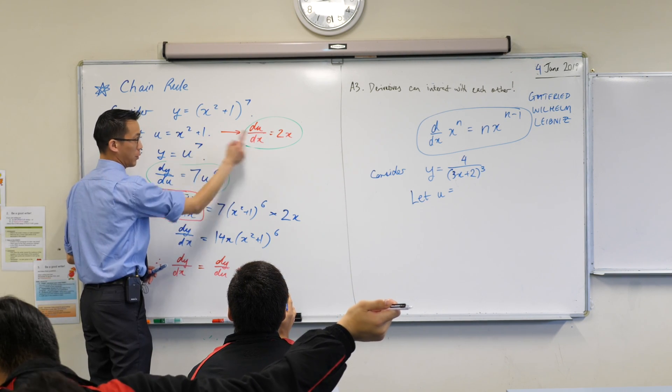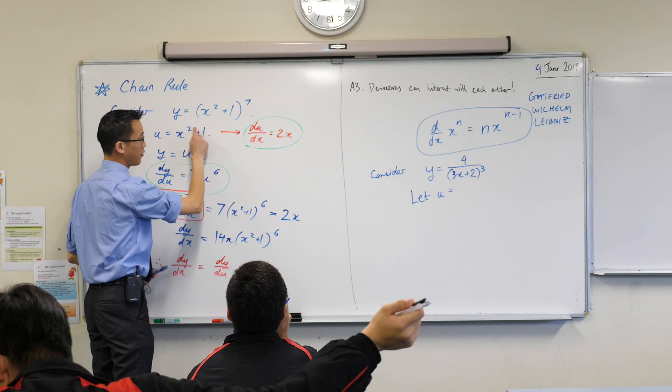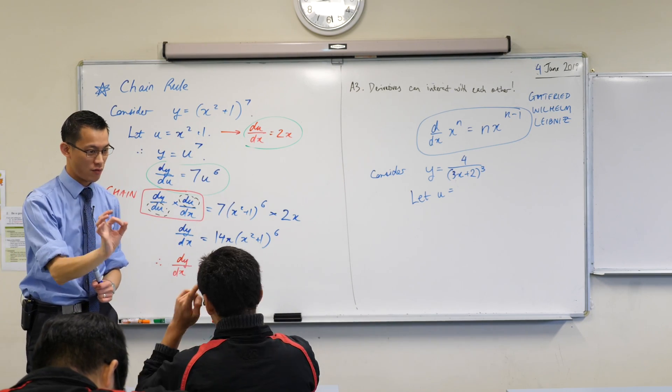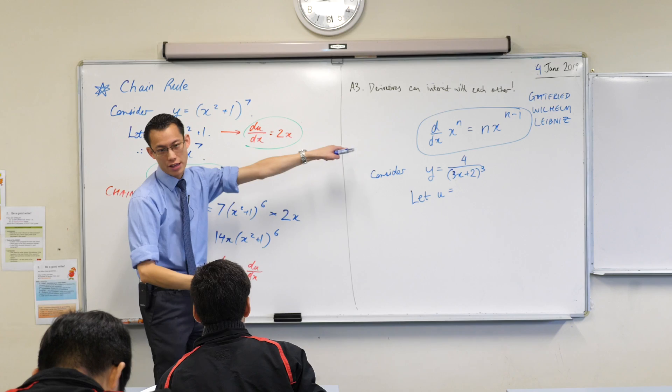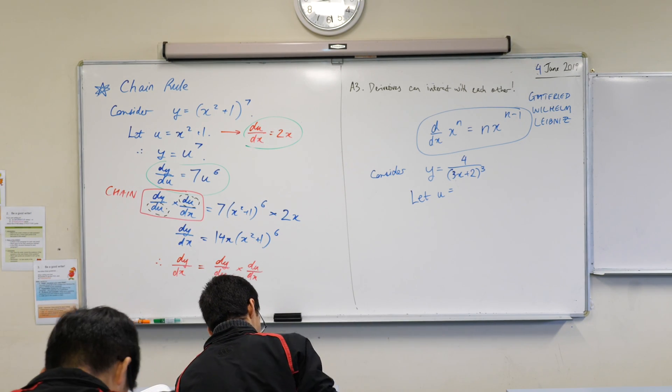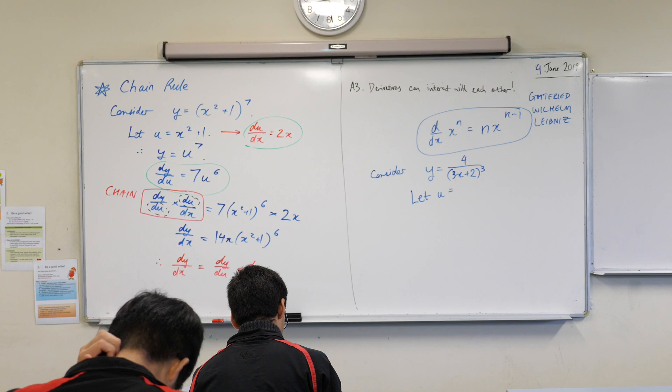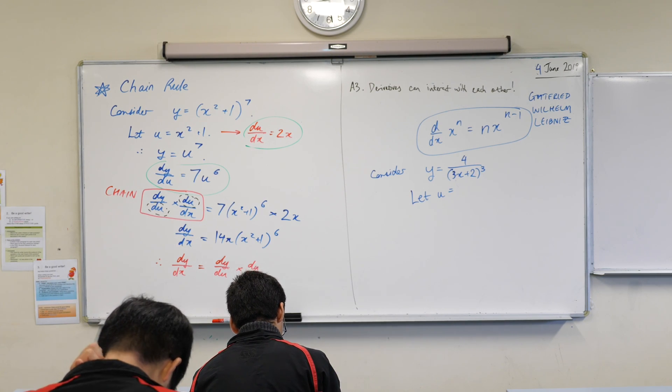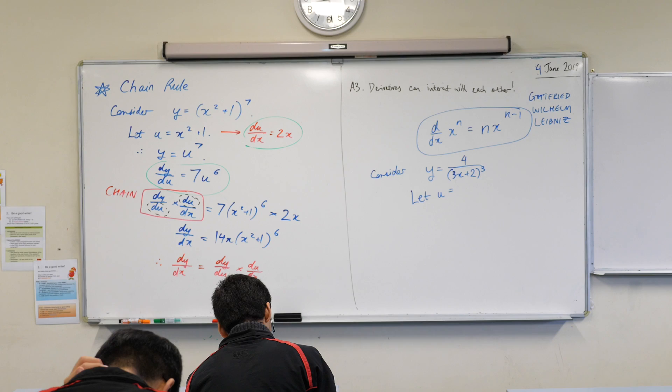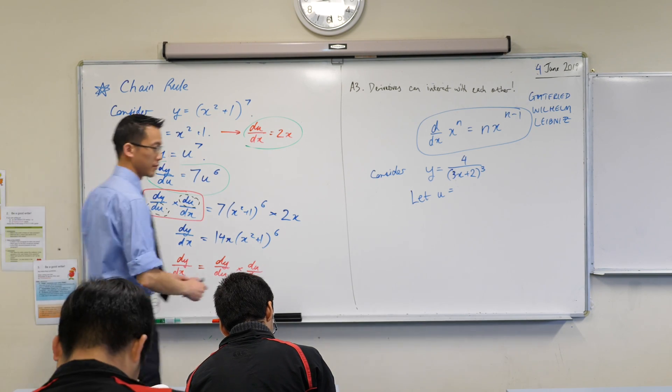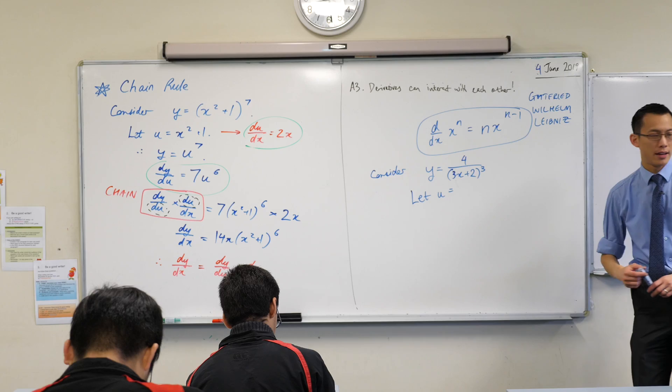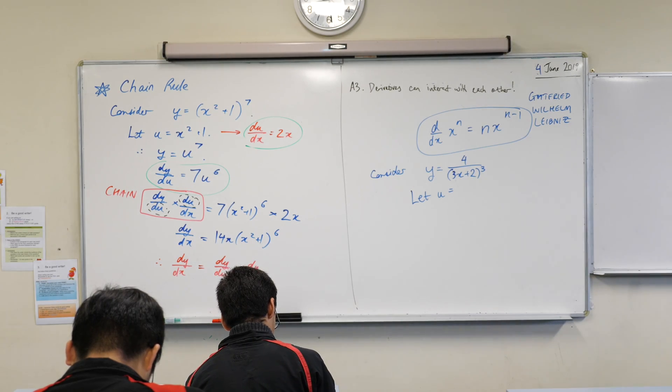When we differentiate the x squared, we do get 2x. When we differentiate the 1, the derivative of a constant is always just 0. So, in fact, it's plus 0 on the end there. All good. Hey, Russell. How did this become u squared? Think about that. Let me know when you're ready, Mrs. Lees.